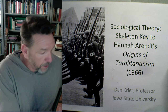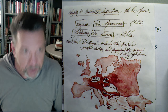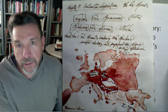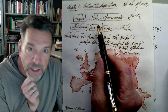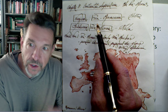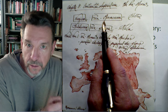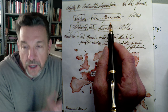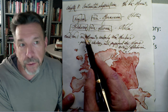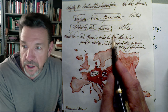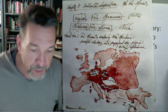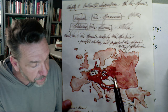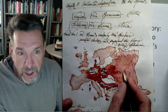Arendt's chapter opens on continental imperialism and the Pan movements. She argues that Wilhelmian World War I German activity, and certainly Nazism, is linked to the pan-German movements of the late 19th and early 20th centuries. And Bolshevism is linked to the pan-Slavic movement. So really, Hitler and Stalin — the two main leaders of totalitarian regimes in the early and mid-20th century — are both following the logic of continental imperialism.